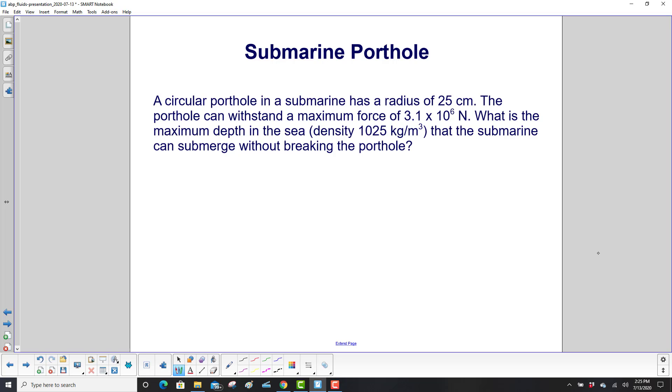Submarine porthole. A circular porthole in a submarine has a radius of 25 centimeters. The porthole can withstand a maximum force of 3.1 × 10⁶ newtons. What is the maximum depth in the sea (density 1025 kg/m³ saltwater) that the submarine can submerge without breaking the porthole?